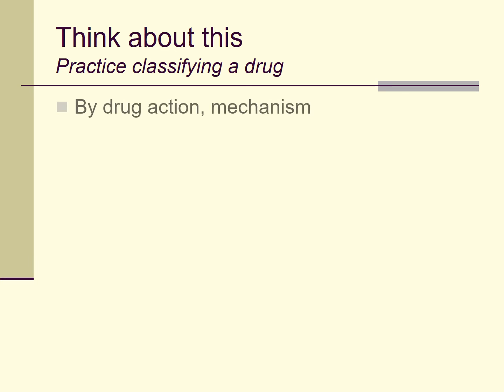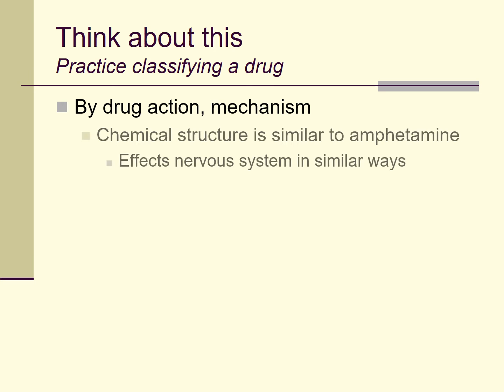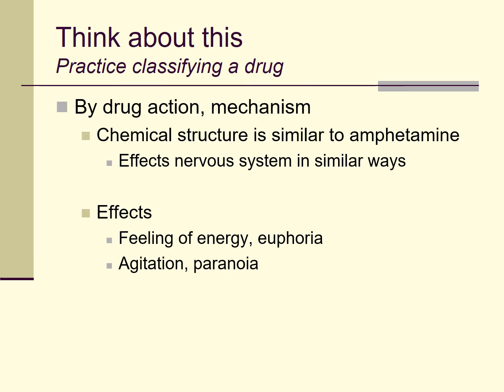A third way to classify is by chemical mechanism or structure — the drug action it has within the brain. This drug is chemically similar to amphetamine and affects the nervous system in similar ways. Amphetamines produce powerful stimulant effects: people feel more alert, more energized, in some cases more positive in outlook, but they can also become more agitated or even paranoid — similar to what we observe with this new drug. So using this approach, we might classify it as a stimulant, grouping it with amphetamine, methamphetamine, cocaine, etc.